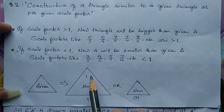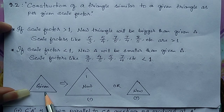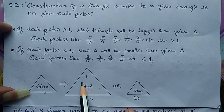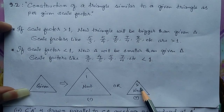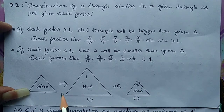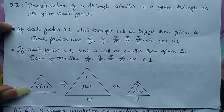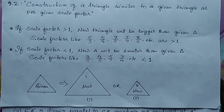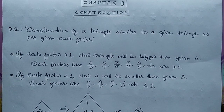The first possibility is that the new triangle we are going to construct is bigger than the given triangle, and they can still be similar. In the second case, the new triangle can also be smaller than the given triangle. So how do you know which it will be? You need to know the scale factor.